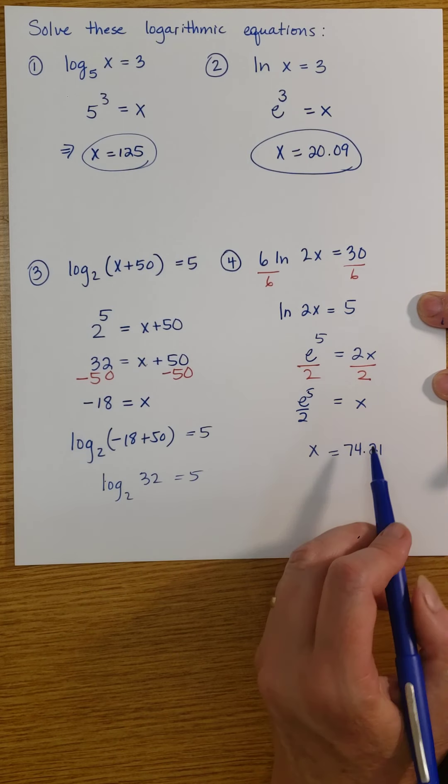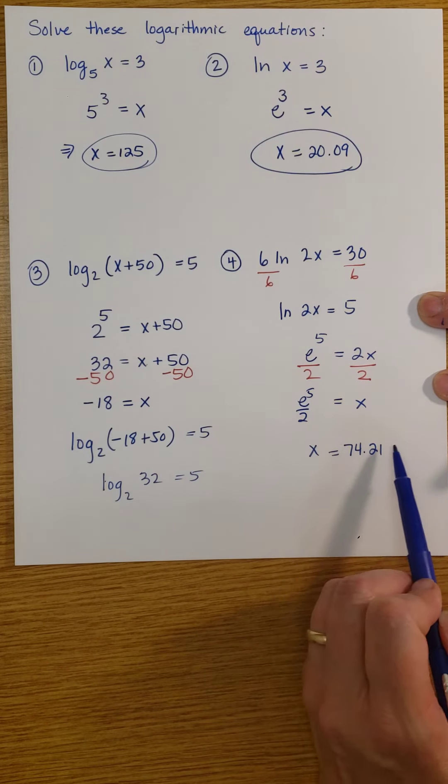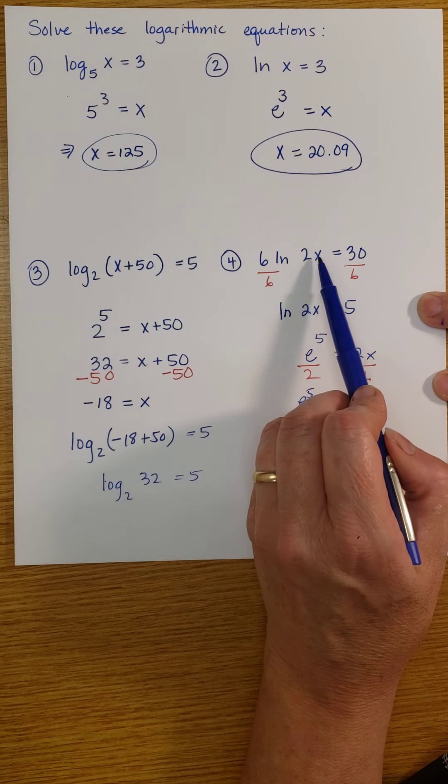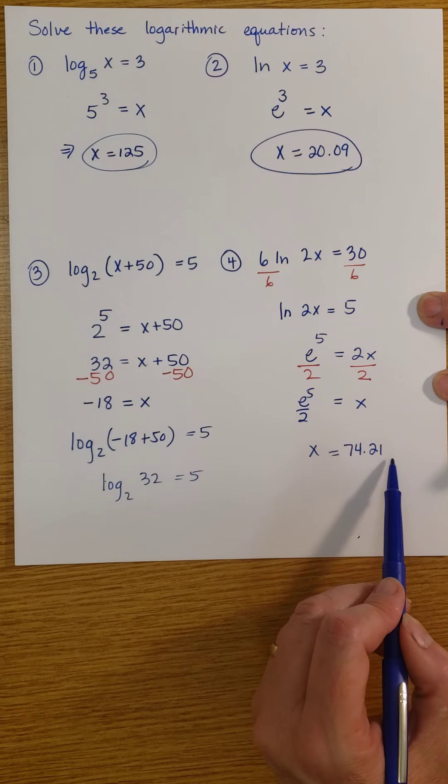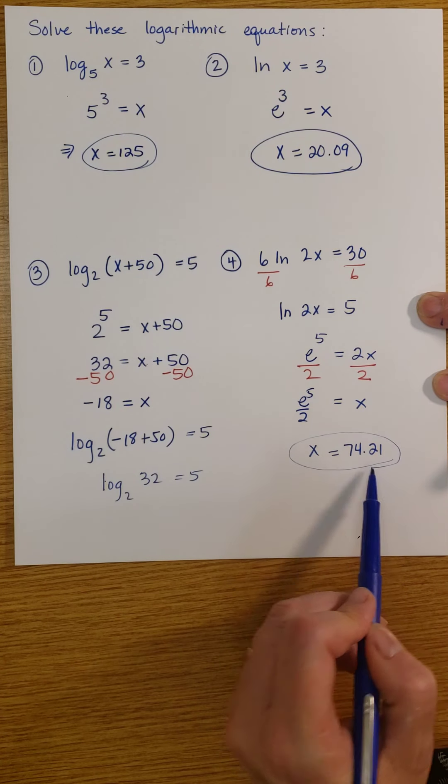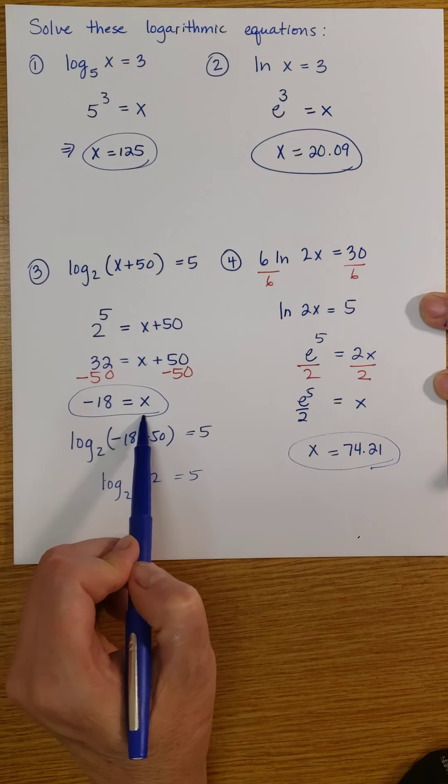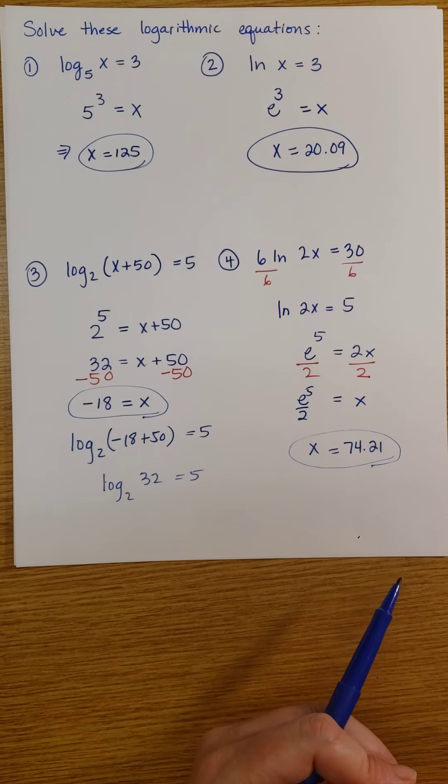And you'll see that this is positive. If I plug this in here, I'm going to multiply it by positive 2, which is still positive. So this is going to work when I plug that back in.